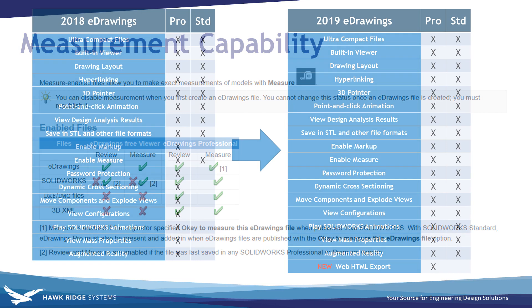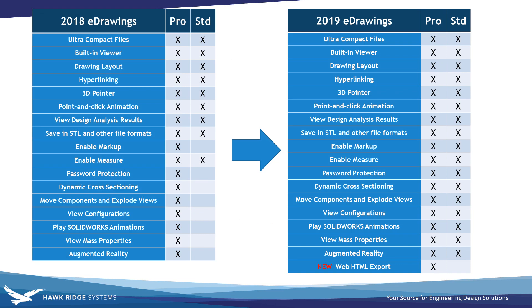For 2019, all this confusion is cleared up because all the tools that were previously only available in eDrawings Professional — the ability to measure, section, move components, and do markups — are all now available in the Free Viewer. So no more segmentation there.